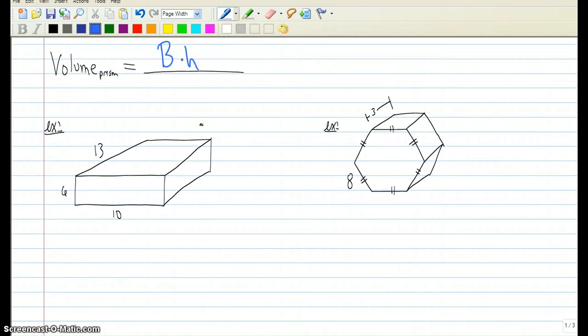So as we look at this first example, we're going to treat this front rectangle as our base. So the area of that base is 60, and then the height is the distance between this front base and the back base. So the height then would be 13. Multiply 60 times 13, and we have 780.